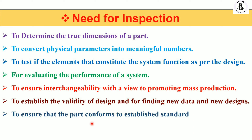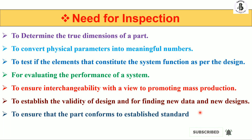The seventh point is to ensure that the part conforms to established standards. Whatever is designed as per standards must also be manufactured to those standards. At the final product stage, measurement ensures conformance to established standards. If you are not measuring, you cannot claim it meets the standard. Once you measure the dimensional accuracy of your finished product, you compare it with the standards, and if the readings match you can confirm conformance to the established standard.